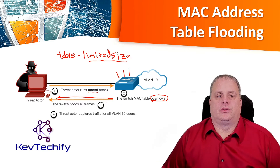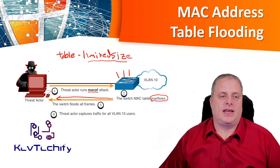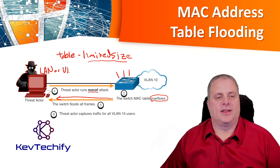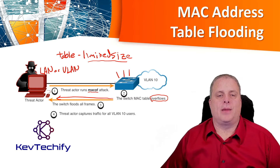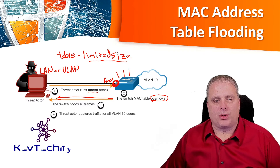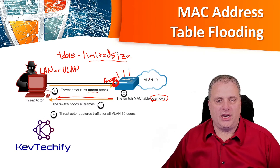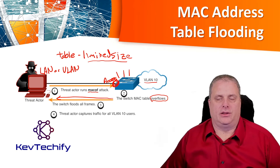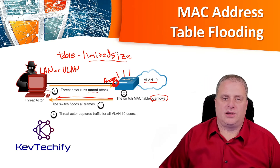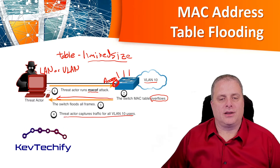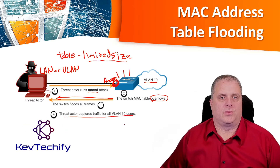There are some limitations, though. The threat actor needs to be on the same LAN — the same local area network — or in the same VLAN. If they're not, they won't see that traffic. This is an access port, and an access port is only set up to send one VLAN's worth of information. In this example, our threat actor is in VLAN 10 — that's all they're going to see. They're not going to see VLAN 20 or VLAN 30, only VLAN 10.